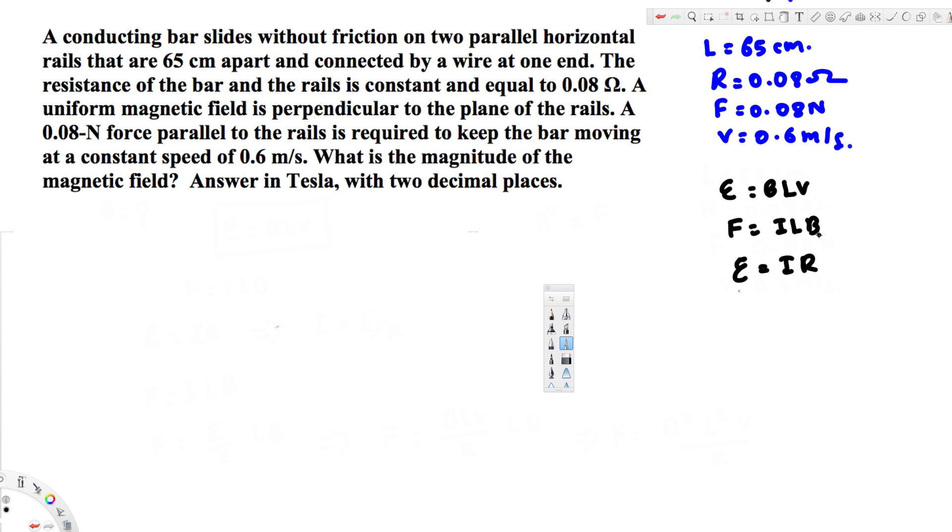The question is asking us to find the magnetic field. If you look at the question, we have the force. We can use this equation F equals ILB. We have the speed and this one, but let's see which one we can use. We don't have the current, so we can replace this current.